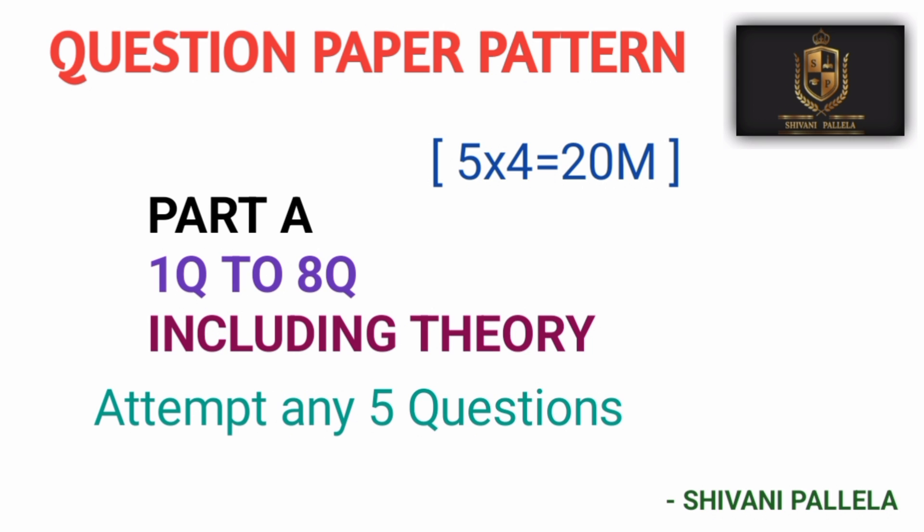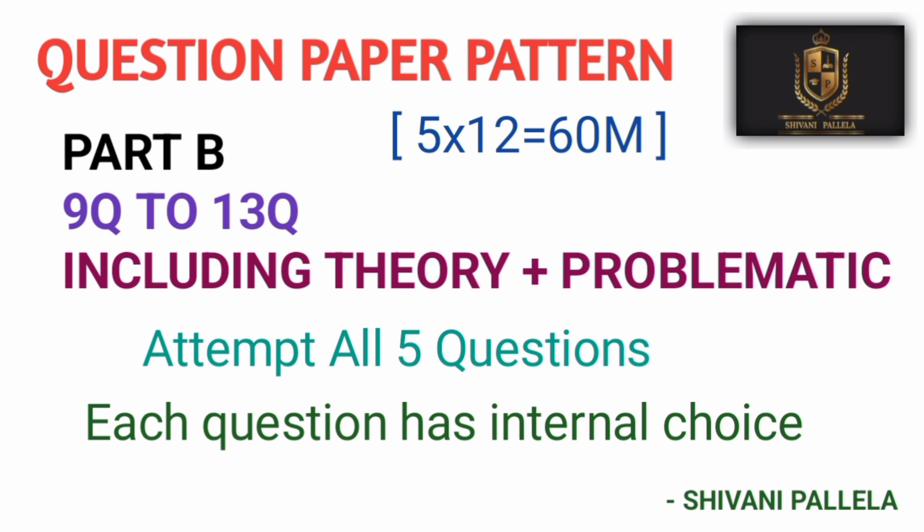For Part A theory questions, try to write side by side two pages in your answer booklet to score full marks. Some students write only one side, so they will not get full marks. For four marks, writing both sides is compulsory.